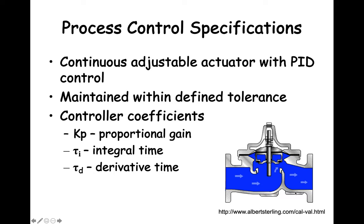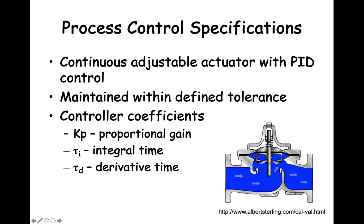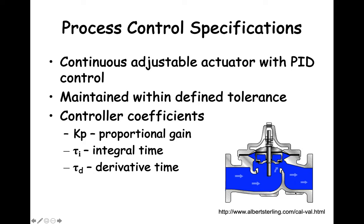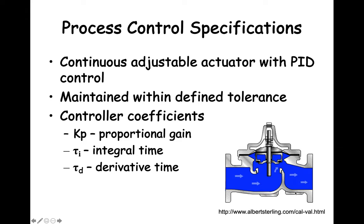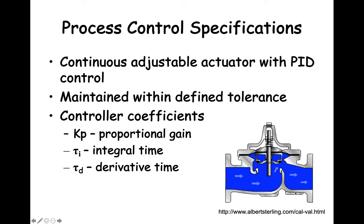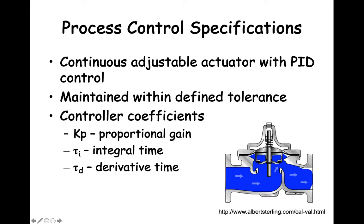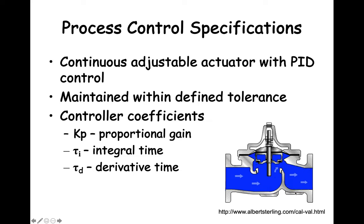One aspect of good control is staying within the user-defined tolerance limits. For example, a person using the fluid heater we have been studying could specify that he or she wants the fluid temperature to be 41.5 degrees C plus or minus 0.3 degrees C. With this type of process performance specification, the outlet temperature can be monitored to see what percentage of the time the outlet temperature is within the specified tolerance and what hopefully small amount of time the outlet temperature is outside the specified tolerance limits.